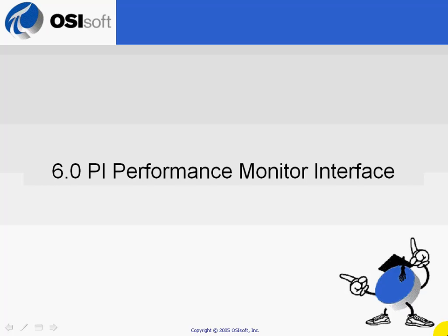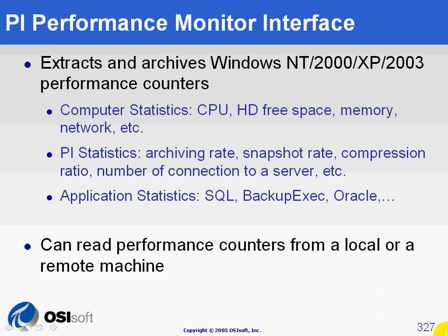The PI Performance Monitor Interface has been designed to extract information out of counters provided by Windows machines. Right out of the box, Windows operating systems will provide several hundreds of counters, giving information about both hardware and software. For example, one could look at CPU usage, free space on hard drives, memory usage, network statistics, printer statistics, and so on.